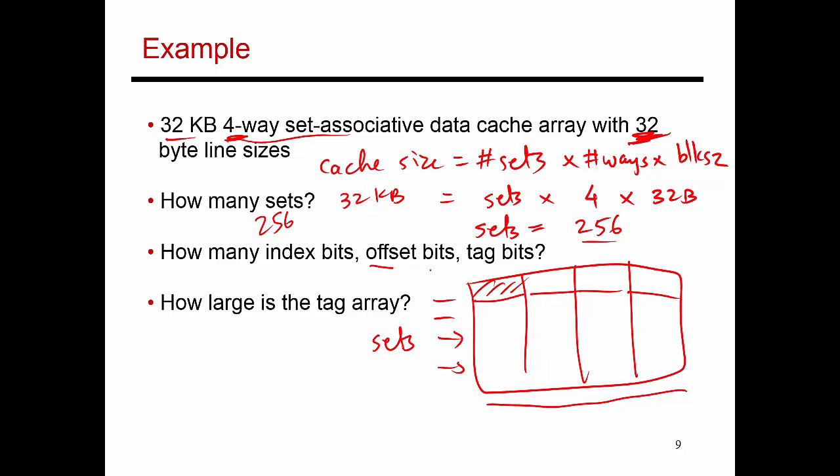Now, I can answer this fairly easily. The offset bits is just a function of the block size. If the block size is 32 bytes, I need five bits for my offset. The index bits is a function of the number of sets. Since I have 256 sets, I need eight bits as my index. And the tag is everything else. 32-bit address minus eight bits for index minus five bits for the offset. That gives me a 19-bit tag.